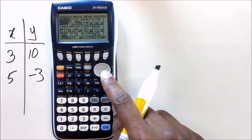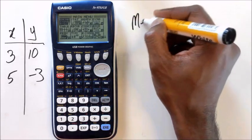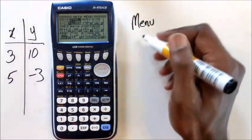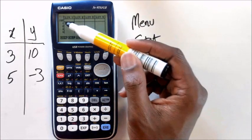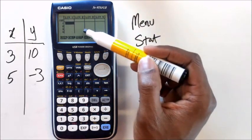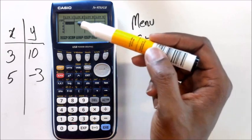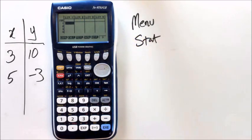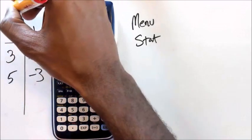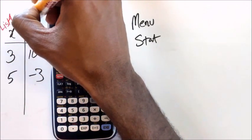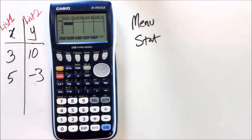What you want to be doing is go into your main menu, and then go into stat, and what you should see is something called list 1 and list 2. Now imagine it like this, all the x values need to be going in list 1, and all the y values need to be going in list 2.